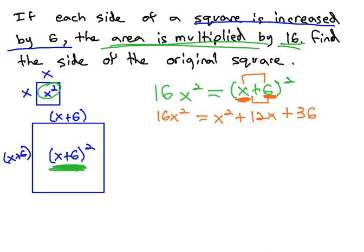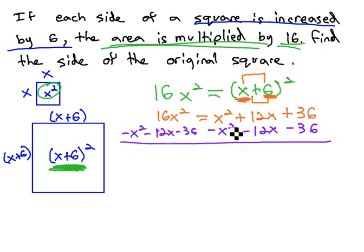Now we like the equation to equal 0 before we can factor it, so we're going to subtract x squared, subtract 12x, and subtract 36 from both sides. Keeping x squared positive, we end up with 15x² - 12x - 36 = 0.